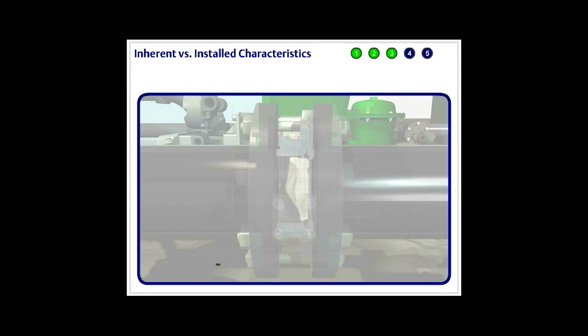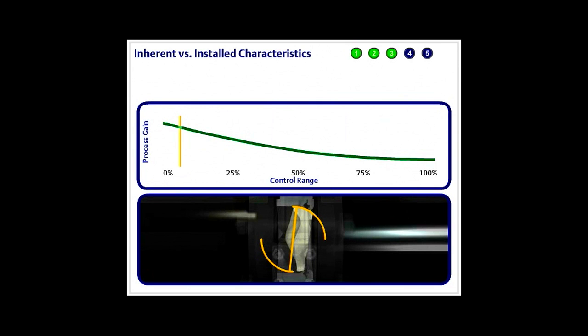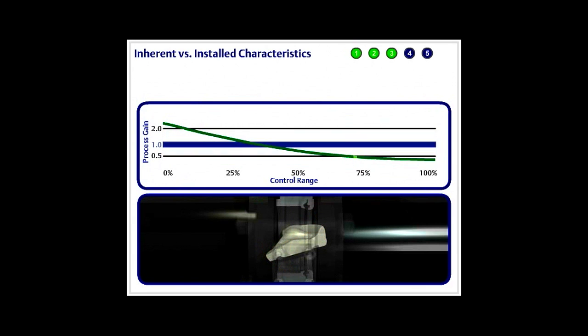Going one step further, mathematically, the slope of the installed flow characteristic curve is called valve gain. Valve experts believe that a valve provides effective control when, as the valve is operating, its installed gain remains between 2 and 0.5, with the ideal gain value being 1.